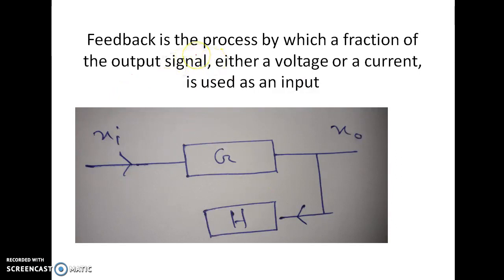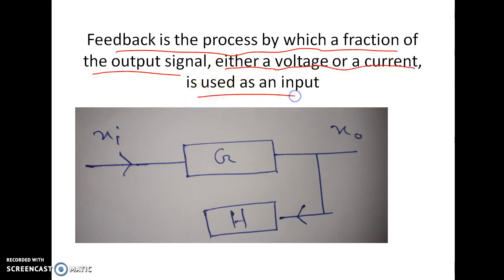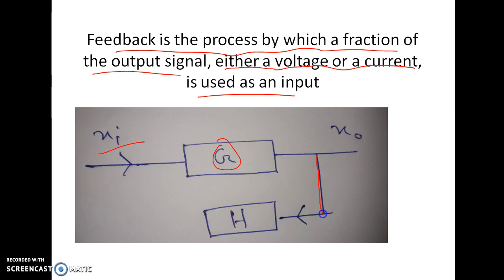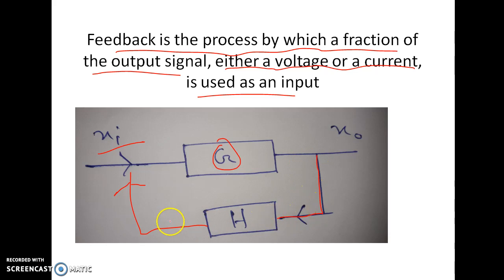Now, what is feedback? Feedback is the process by which a fraction of the output signal — either a voltage or a current — is used as an input. From this diagram, XI input enters the gain block G, whose gain factor is G and output is X_out. What we do is take a particular amount of the output and send it into another block H, and then the output of the H block is given back to the input side. So feedback means some of the output is taken as input.